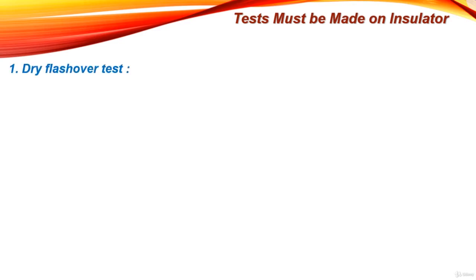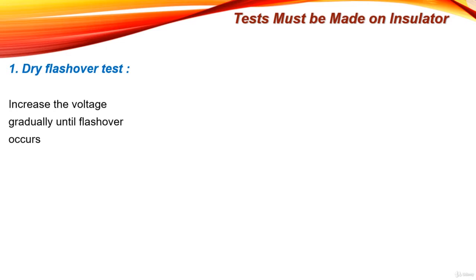The first test is the dry flash-over test. This test is done by increasing the voltage gradually until flash-over occurs on the insulator surface. In this test, we should use a dry and clean insulator, since these factors affect the flash-over voltage. Also, in this test, we use AC high voltage at power frequency for testing the insulator.